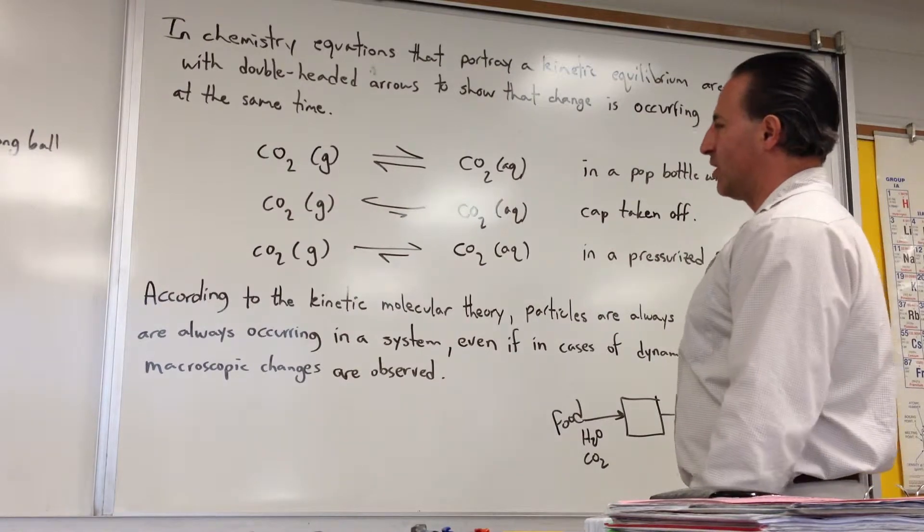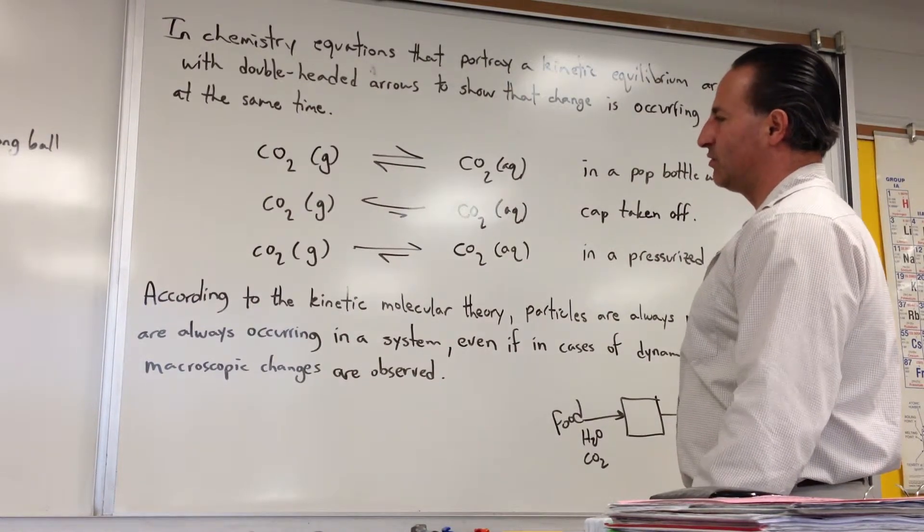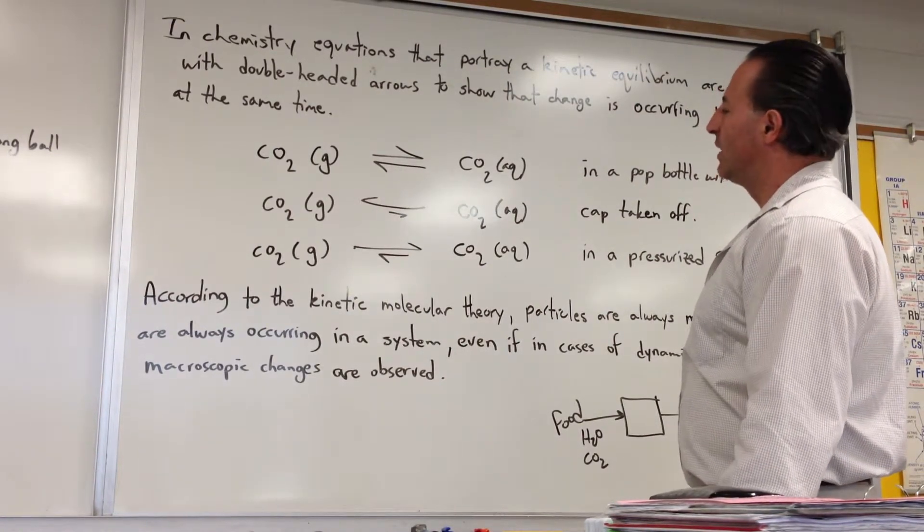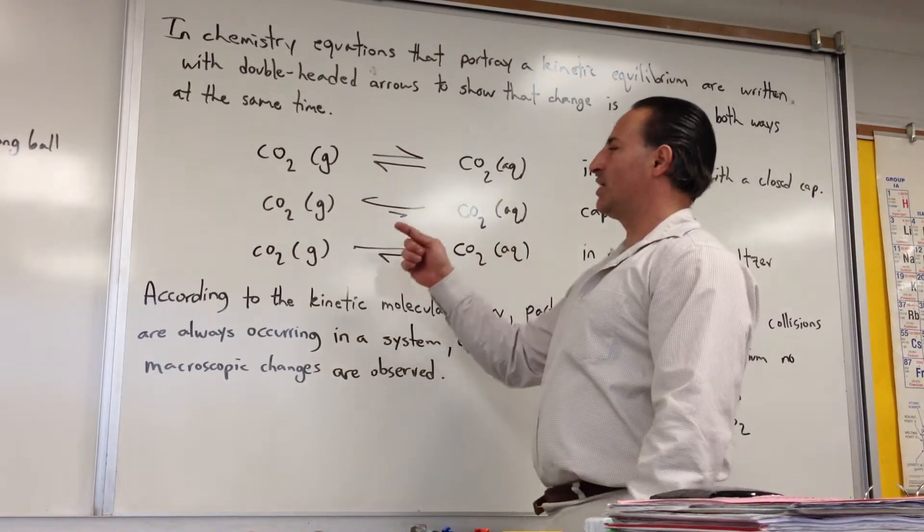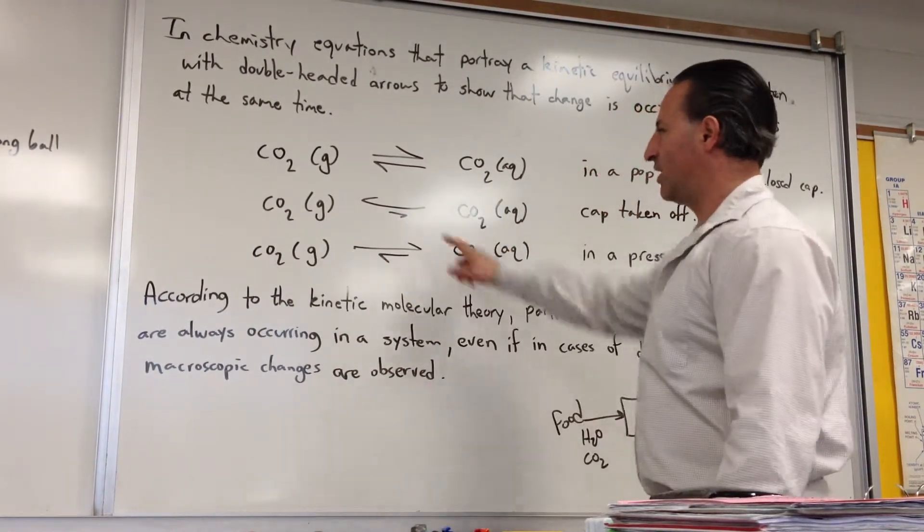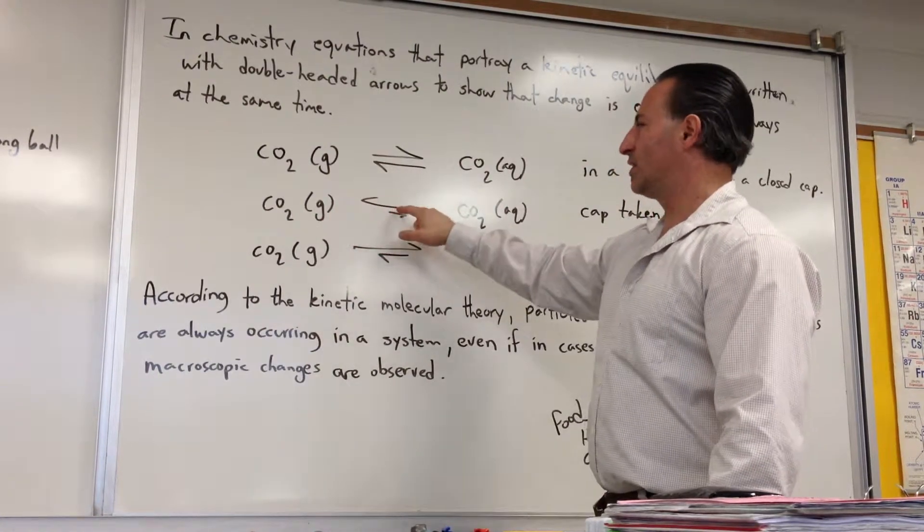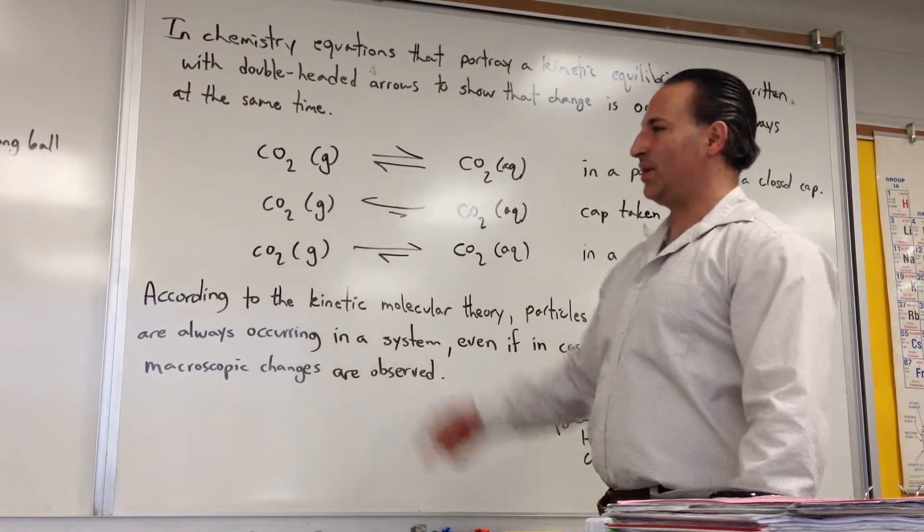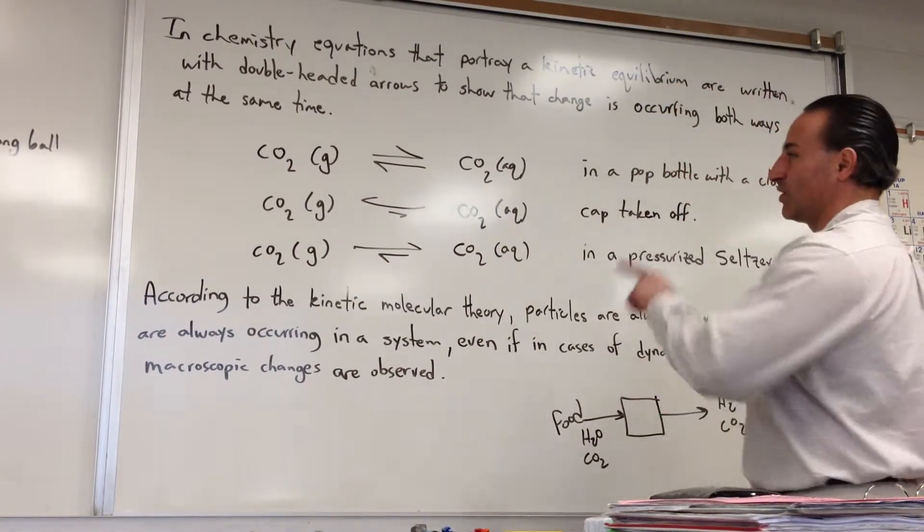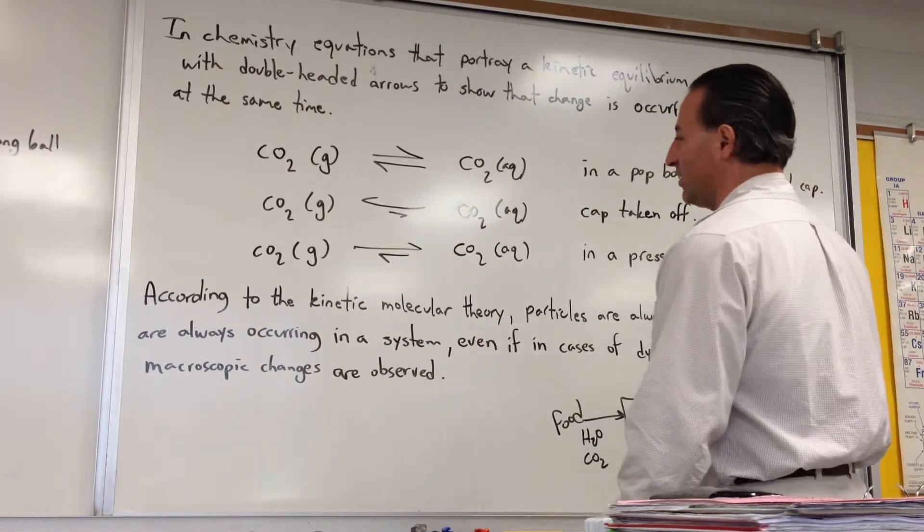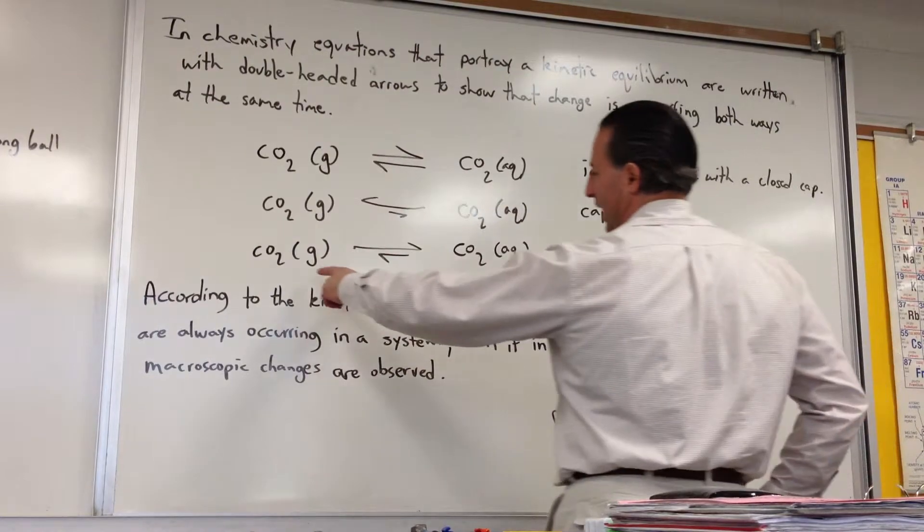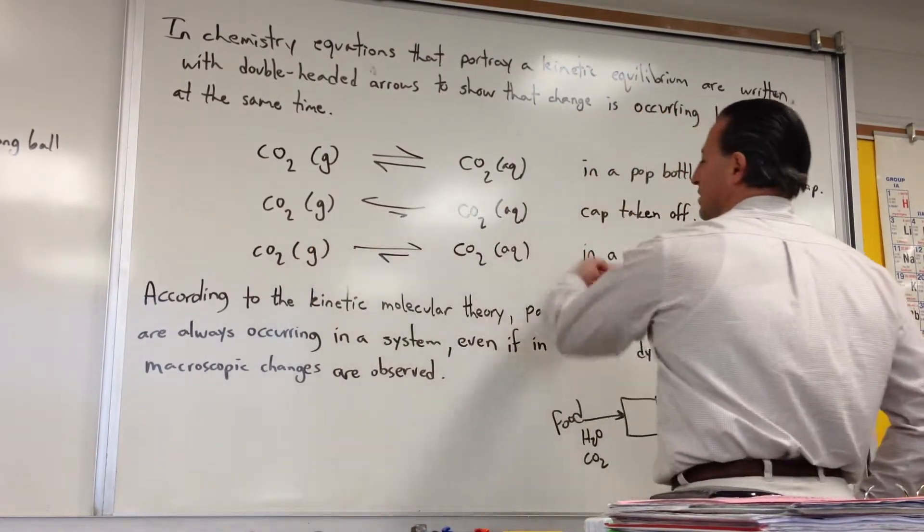If you were to take the cap off the bottle, now what's going to happen is you've reduced the pressure over the liquid and it allows some of the CO2 to move out of the aqueous solution into the gas phase. So I've drawn the arrow in the direction of the gas phase to be larger to show that the equilibrium is shifted that way now, and that the reaction going to the left is faster. If on the other hand we were to pressurize the system and add CO2, you can get the system to go this way.